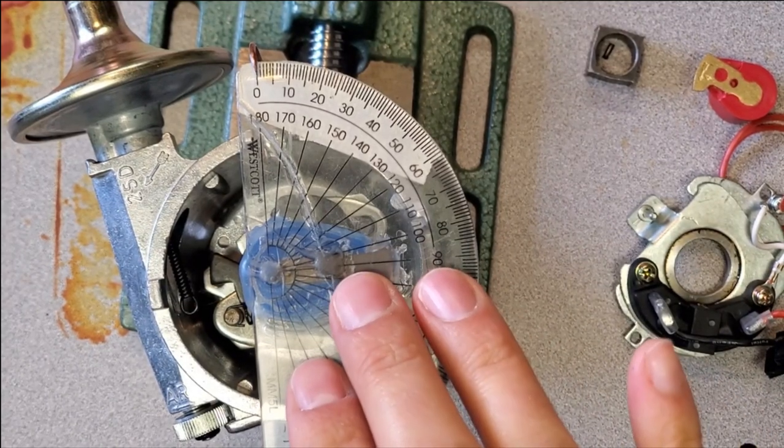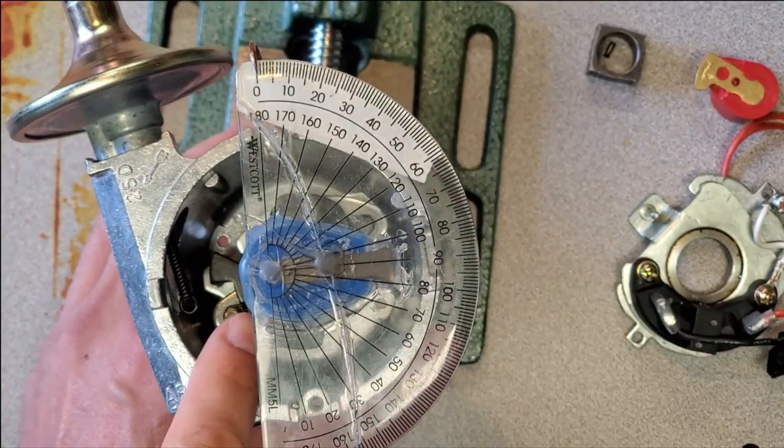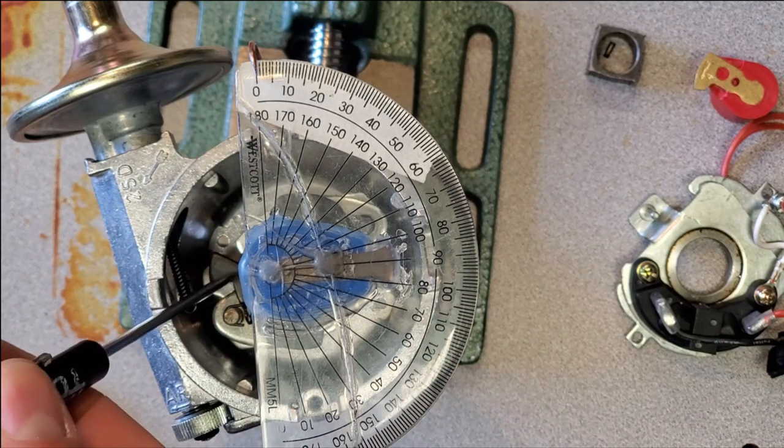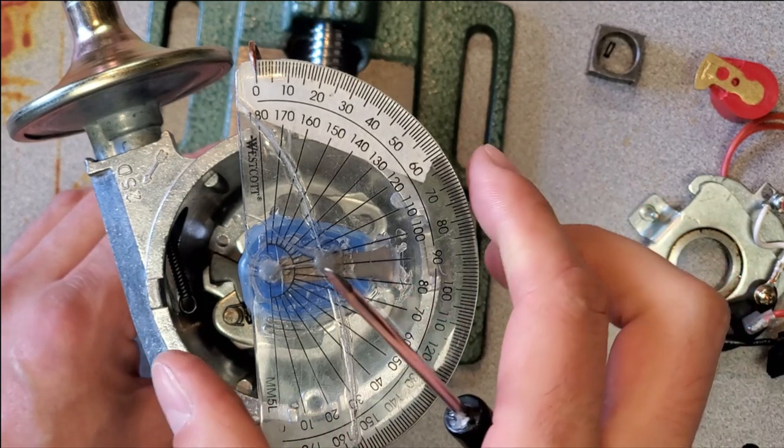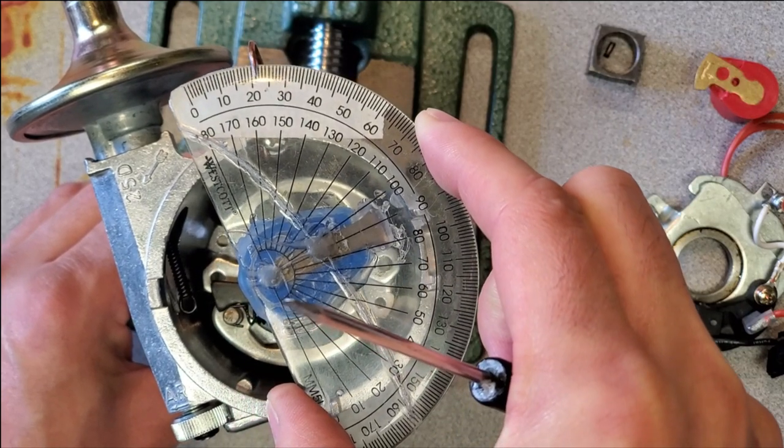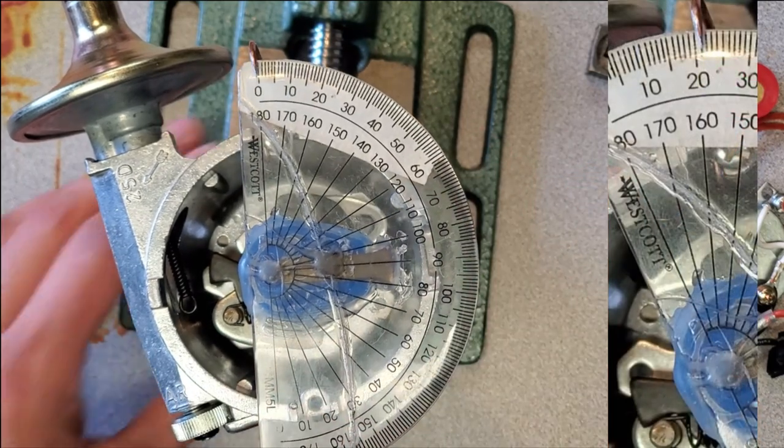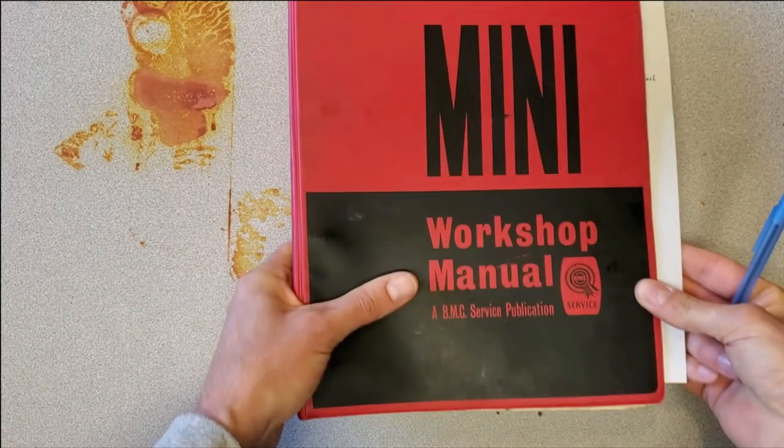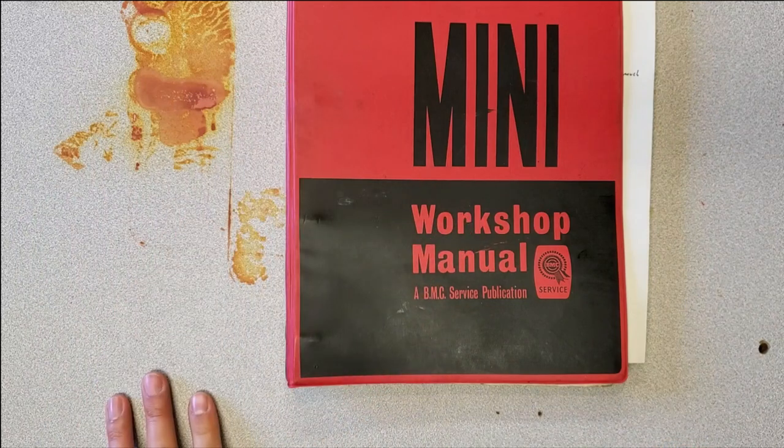I now have the PowerSpark set up with the protractor and pointer set to measure the advance cam. And again, I'm rotating the advance all the way until it hits this stop. 21 degrees. Now that I've measured both the units, let's take an example from the book and find out how different these two units are from a factory unit.